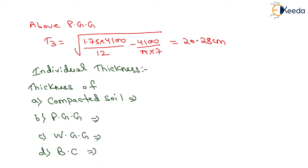The thickness of the compacted soil layer equals T1 minus T2, that is 38.10 minus 31.77.